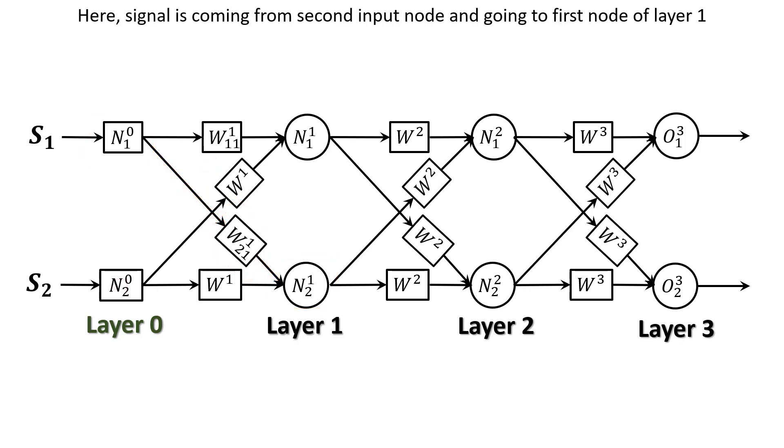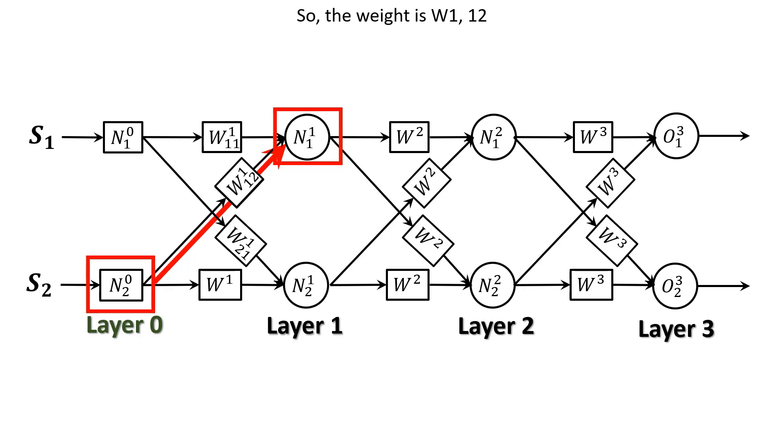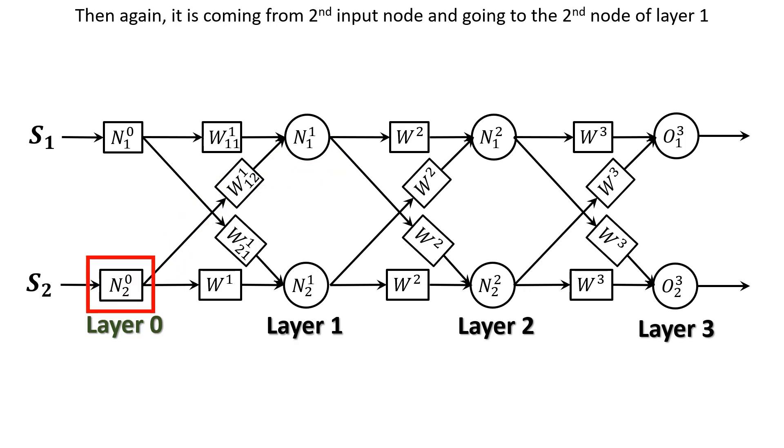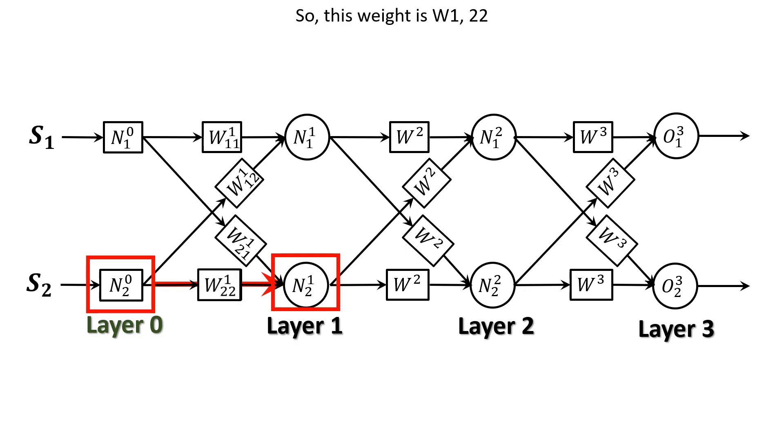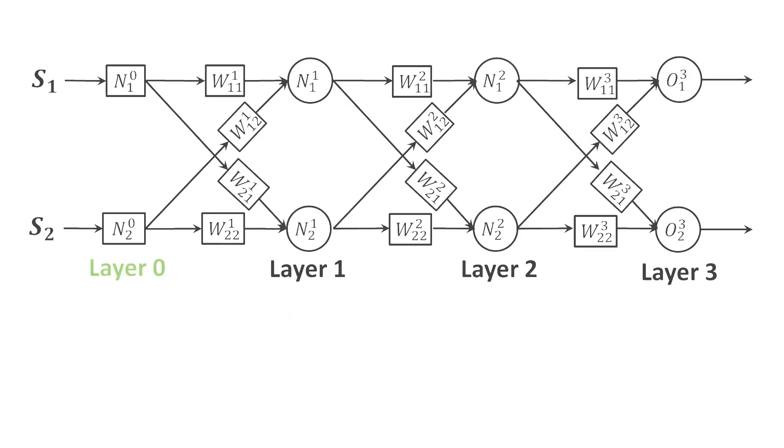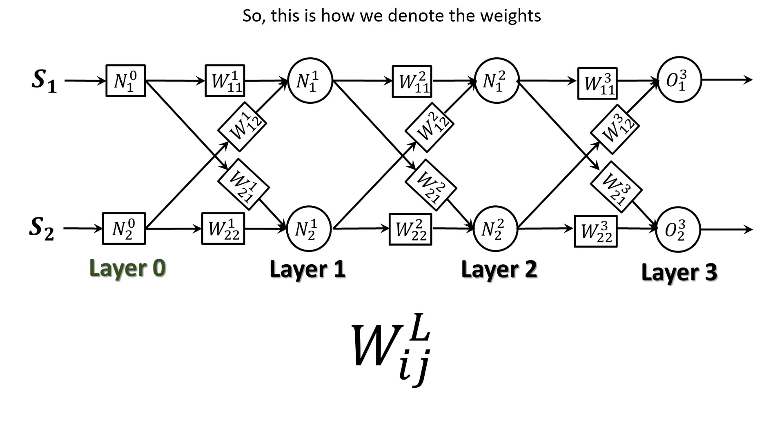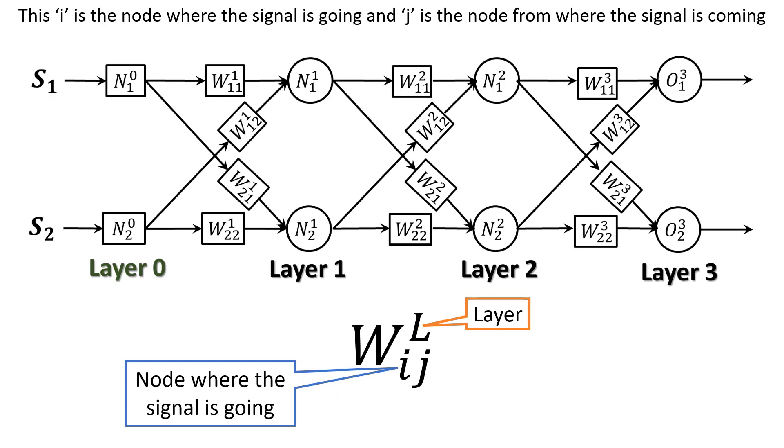Here, signal is coming from second input node and going to first node of layer 1. So, the weight is W211. Because it is going to node 1 and coming from node 2. Then again, it is coming from second input node and going to the second node of layer 1. So, this weight is W221. Because the signal is going to node 2 and coming from node 2. So, this is how we denote the weights. The superscript represents the corresponding layer. This i is the node where the signal is going and j is the node from where the signal is coming.